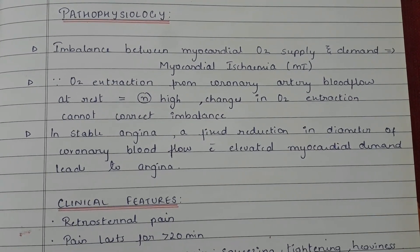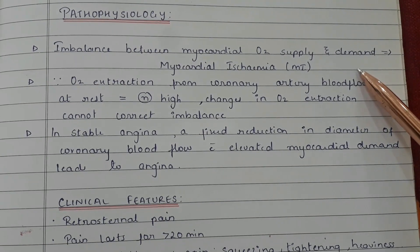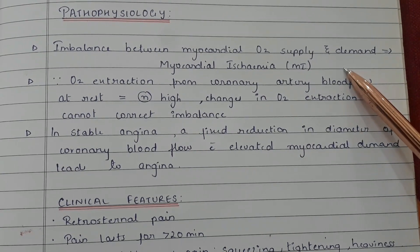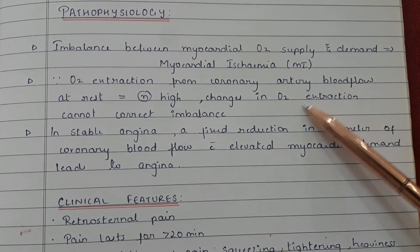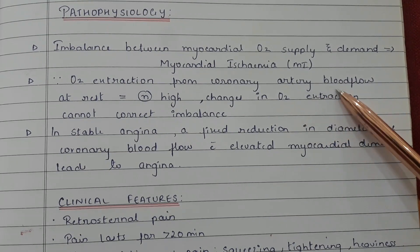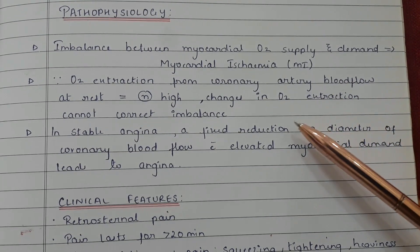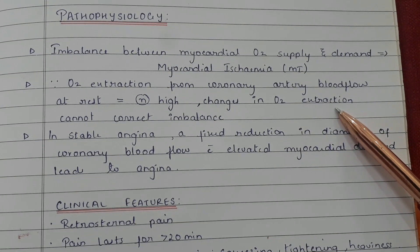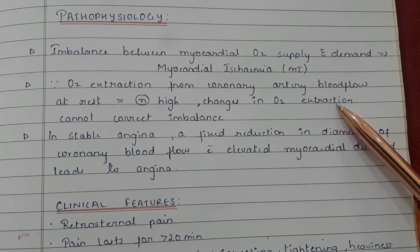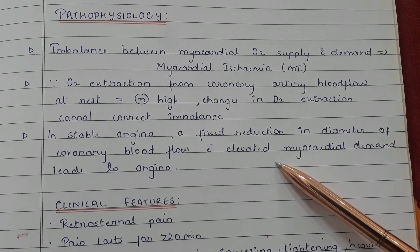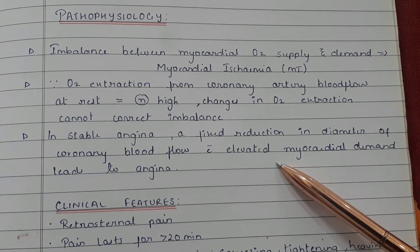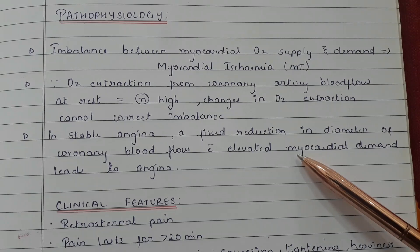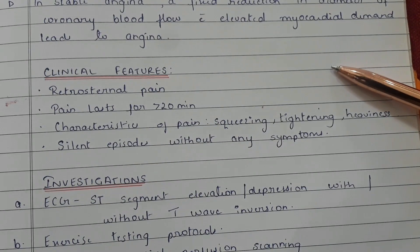In the pathophysiology of angina, an imbalance between myocardial oxygen supply and demand results in myocardial ischemia. Since oxygen extraction from coronary artery blood flow at rest is normally high, changes in oxygen extraction cannot correct this imbalance. In stable angina, a fixed reduction in coronary blood flow diameter with elevated myocardial demand leads to angina.